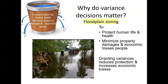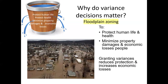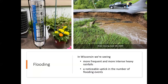Another type of zoning in most parts of Wisconsin is floodplain zoning. Some of its purposes are to protect human life and health and to minimize property damages and economic losses. Granting variances for homes or other buildings to be built within the floodplain where they're not allowed can harm those purposes. We are seeing more frequent and more intense heavy rainfalls and a noticeable uptick in the number of flooding events.